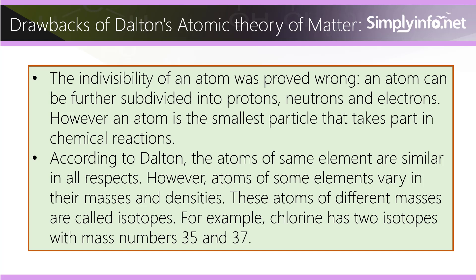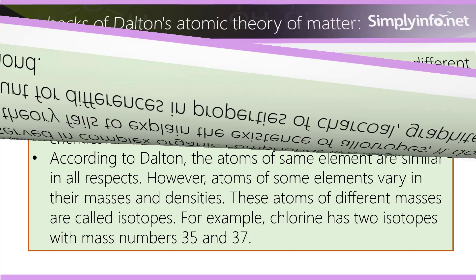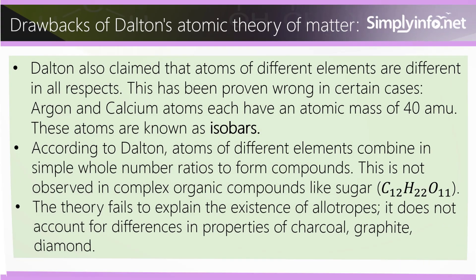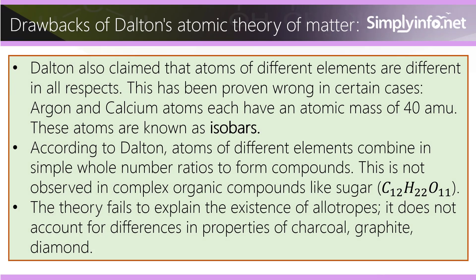These atoms of different masses are called isotopes. For example, chlorine has two isotopes with mass numbers 35 and 37. Dalton also claimed that atoms of different elements are different in all respects.